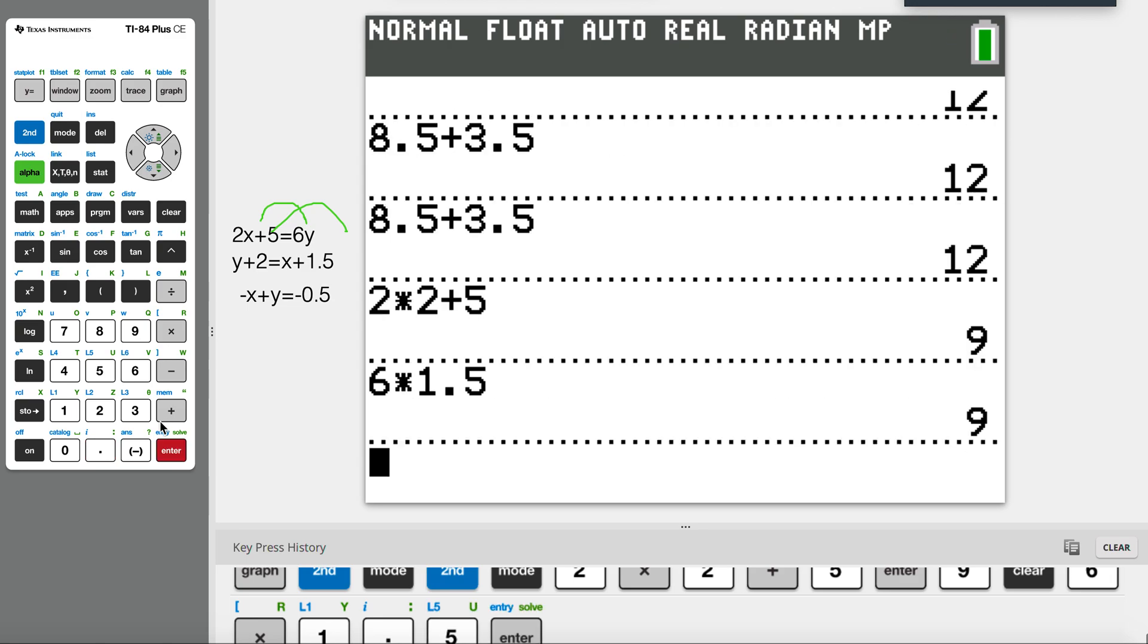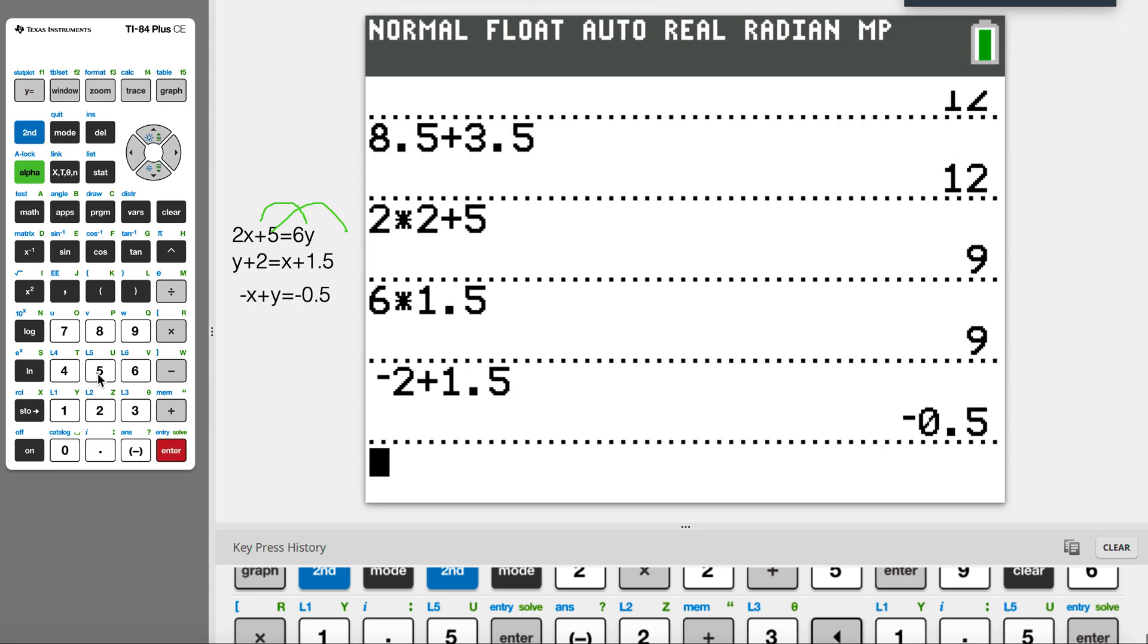Our second equation, let's just use this to prove it. Negative 2 plus y is 1.5. Y is 1.5. Okay guys, so this is a video on how to calculate simultaneous equations.